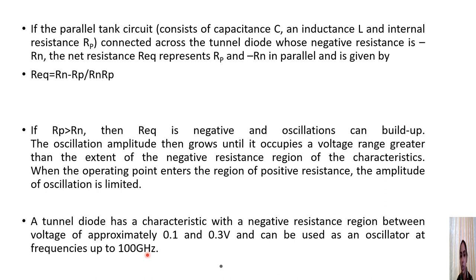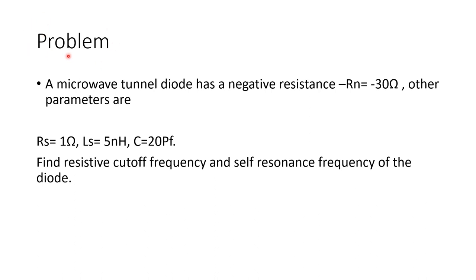To summarize: understand the basic construction of tunnel diode, the conditions for tunneling, and using the energy band diagram explain the working step by step. A problem is presented where certain tunnel diode parameters are given and the task is to calculate the resistive cutoff frequency and self-resonant frequency using the expressions derived from the equivalent circuit's input impedance.